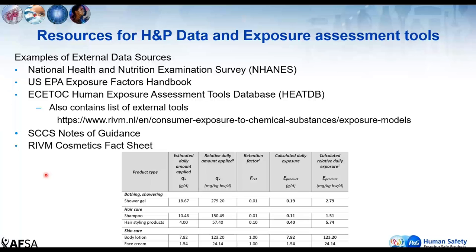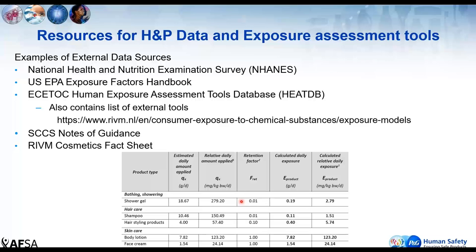The data for these terms comes from understanding how consumers use products — their habits and practices, or H&Ps. There are publications in scientific literature and guidance documents from regulatory agencies that characterize product usage patterns. For example, the SCCS Notes of Guidance from Europe's Scientific Committee on Consumer Safety has characterized how much product is used and retained on the skin for categories like shower gel, enabling estimates of daily chemical exposure.